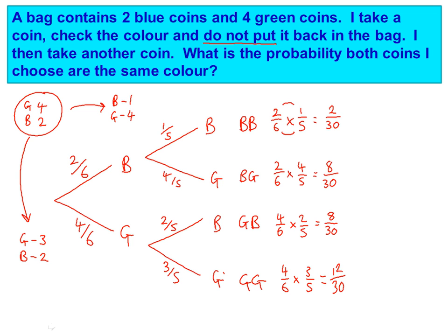We need to read the question and see what it's asking us to do. Well, it's asking us for the probability that both are the same color. So ones which are the same color are blue and blue. So that one would be OK. So that's two out of 30.